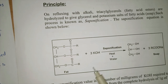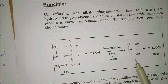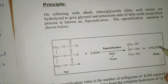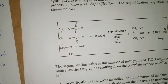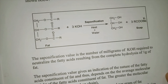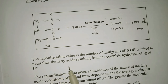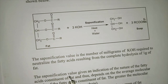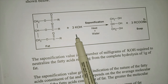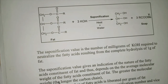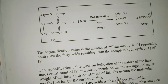The saponification value gives an indication of the nature of the fatty acid constituents of the fats, depending on their average molecular weight. The greater the molecular weight — i.e., the longer the carbon chain — the smaller the number of fatty acids liberated per gram of fat hydrolyzed, and therefore the smaller the saponification number, and vice versa.